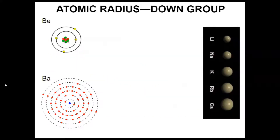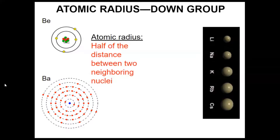Atomic radius is basically just a measure of the size of an atom. Technically, we measure it as half of the distance between two neighboring nuclei, but really just the radius of an atom. I'm not going to test you on that specific definition.